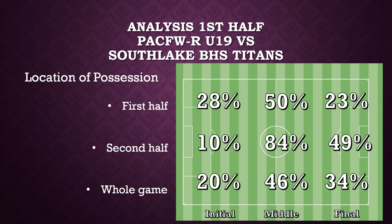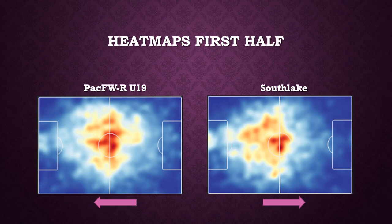This next chart shows the location of possession — meaning either passing or dribbling — broken down into first half, second half, and whole game across initial third, middle third, and final third. In the first half: 28% of possession in the initial third, half in the middle, and 23% in the final. In the second half, we really dominated — they hunkered down to preserve their lead as we kept looking for the tying goal. Our initial third possession dropped to 10%, 84% in the middle, and 49% of our possession in the second half was in their final third. That is a dominant stat. Unfortunately, we couldn't convert those situations into high-quality goals.